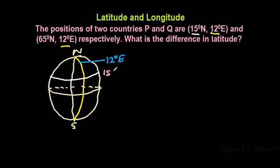So 15 degrees north. Then for the position of Q, which is 65 degrees north, so that one is to the upper end of the north pole. You can have that label as well, 65 degrees north.